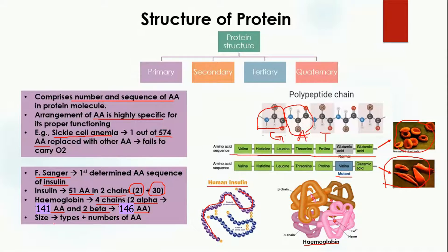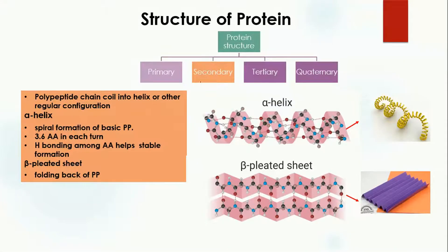The size of a protein depends on the types and number of amino acids present — the more amino acids, the larger the protein. The second level is the secondary structure of the protein. The secondary structure is formed when the polypeptide chain coils into a helix or other regular configuration. A polypeptide is a protein chain — a primary structure of amino acids joined together.